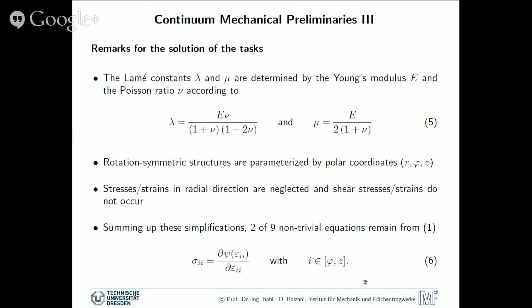So let's come to some remarks that are also required for the tasks, the material parameters. In fact, the Lame constants lambda and mu can be calculated in terms of the Young's modulus E and the Poisson ratio nu by this formula. So E and nu will be given in the task description that you find online. We consider in the task only rotation symmetric structures, which are parameterized by polar coordinates. So R will be the coordinate in radial direction, phi in circumferential direction and Z in axial direction.